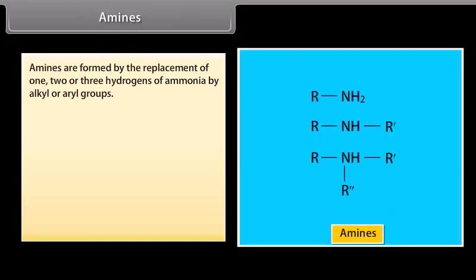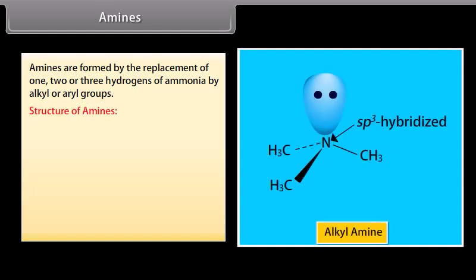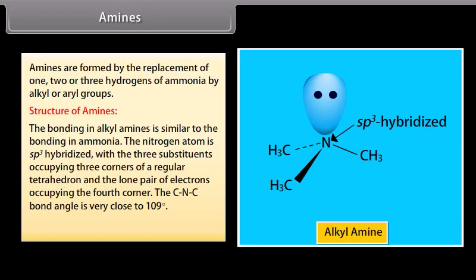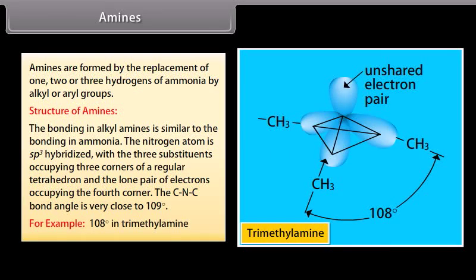Amines are formed by the replacement of 1, 2, or 3 hydrogens of ammonia by alkyl or aryl groups. The bonding in alkylamines is similar to bonding in ammonia. The nitrogen atom is sp3 hybridized, with 3 substituents occupying 3 corners of a regular tetrahedron and the lone pair of electrons occupying the 4th corner. The C-N-C bond angle is very close to 109°, for example 108° in trimethylamine.